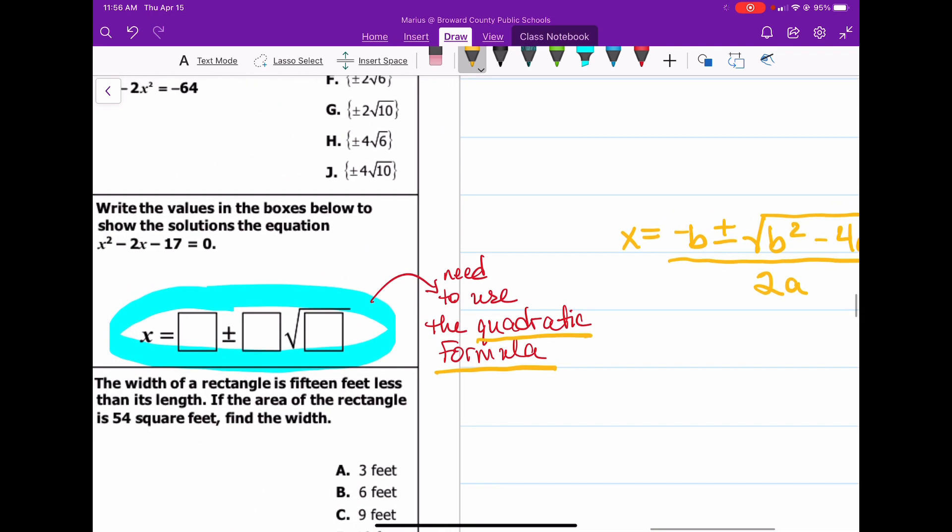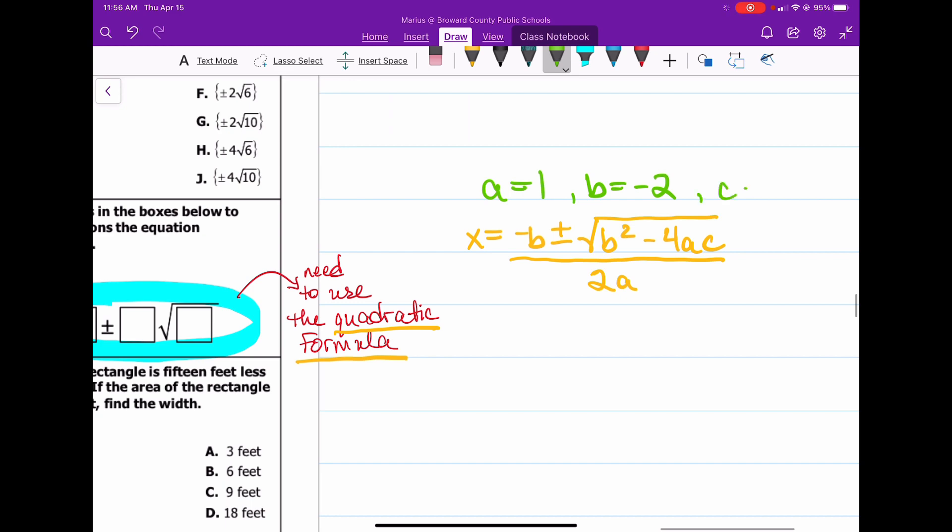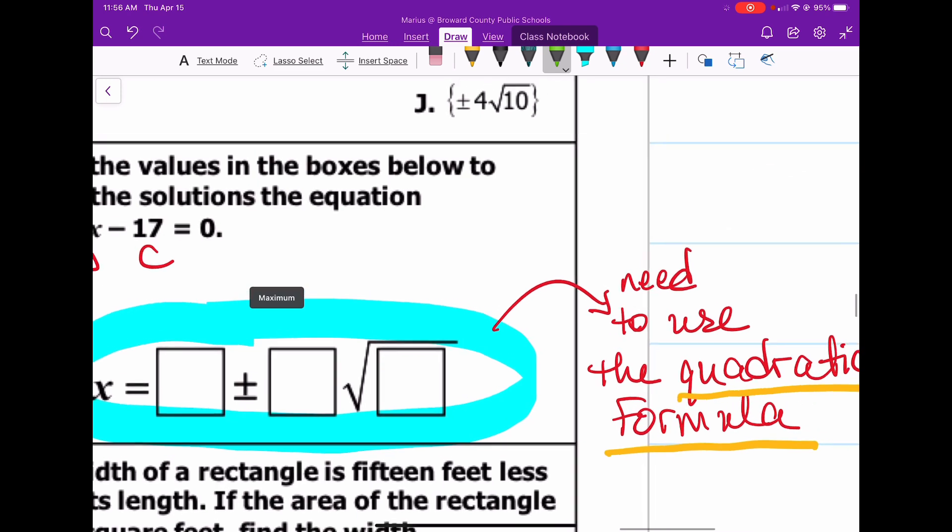So now, without further ado, in order to complete it, we need to label this as a, b, and c. And we know that a is 1. So we have a is equal to 1, b is equal to negative 2, and c is equal to negative 17.